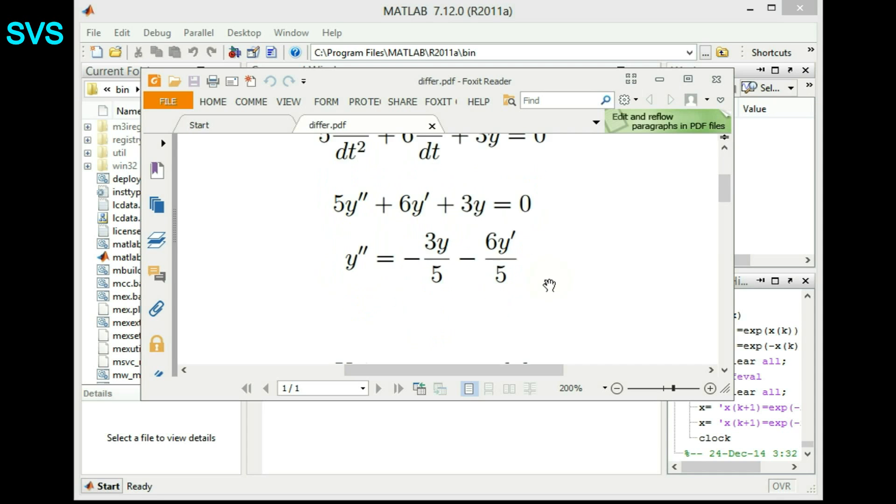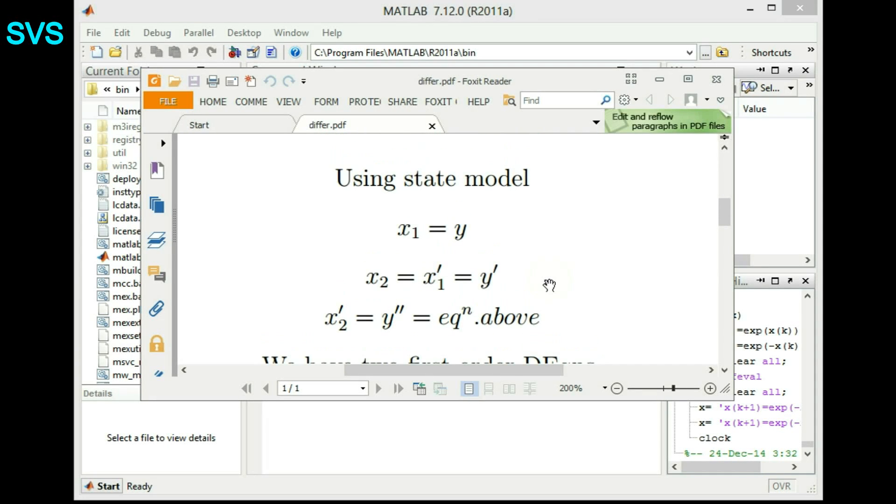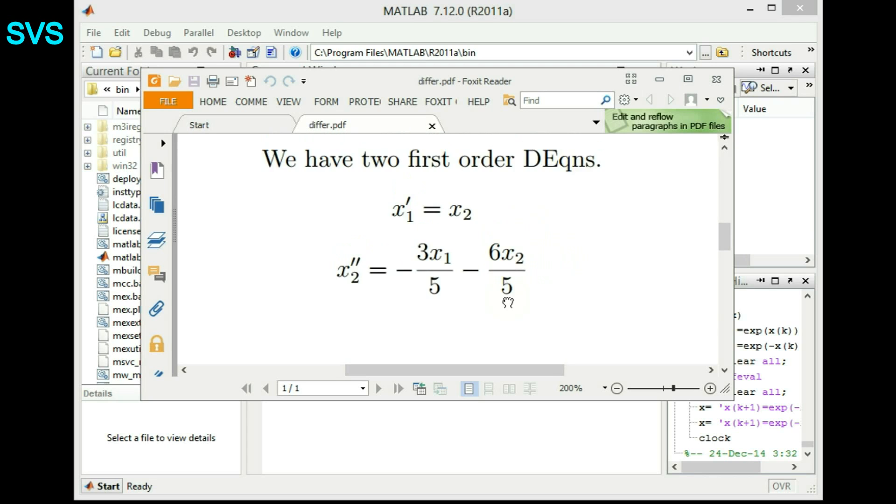So let's frame y as x1 and y dash as x2. So we can term that as state model representation, and then we'll have finally x1 dash equal to y dash or x2, and x2 dash equal to an expression of two things like summation of two things.